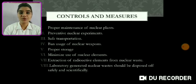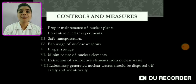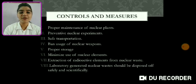And here are some controls and measures of nuclear pollution. First, proper maintenance of nuclear plants. Second, preventive nuclear experiments. Third, safe transportation. Fourth, ban usage of nuclear weapons. Fifth, proper storage. Sixth, minimize use of nuclear elements. Seventh, extraction of radioactive elements from nuclear waste. And eighth, laboratory untreated nuclear waste should be disposed of safely and scientifically.